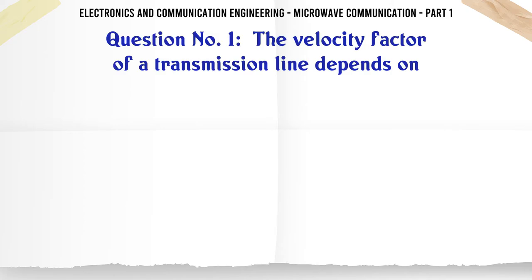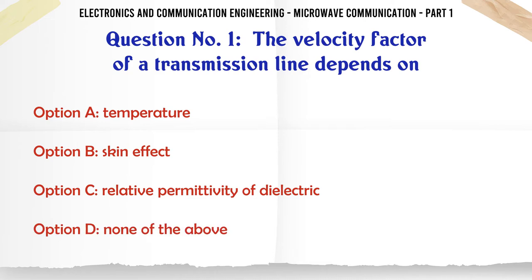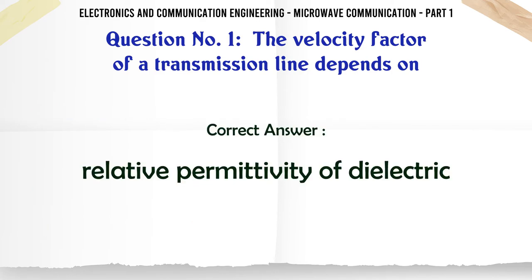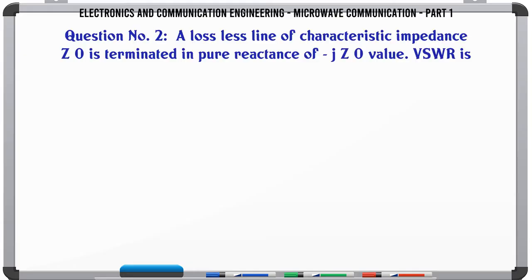The velocity factor of a transmission line depends on: A. Temperature, B. Skin effect, C. Relative permittivity of dielectric, D. None of the above. The correct answer is Relative permittivity of dielectric.